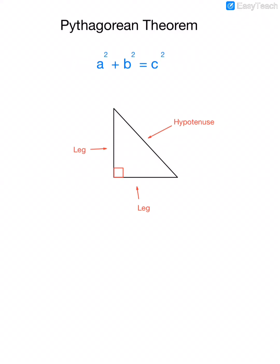So the Pythagorean Theorem is: A squared plus B squared equals C squared. We don't differentiate between either of the legs, so we would just say that one of the legs is side A and the other leg is side B. It doesn't matter which leg is A and which is B. The only one that matters is the hypotenuse — that one is always going to be C. So we need to pick out the hypotenuse and label it side C, and then the other two are A and B. Then we can plug the parts that we have into the Pythagorean Theorem to find out the missing part.